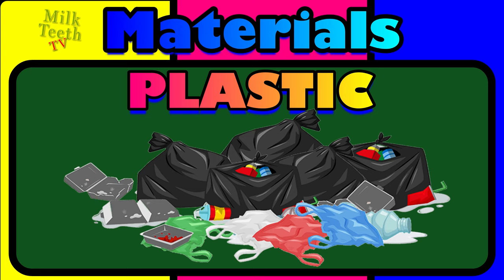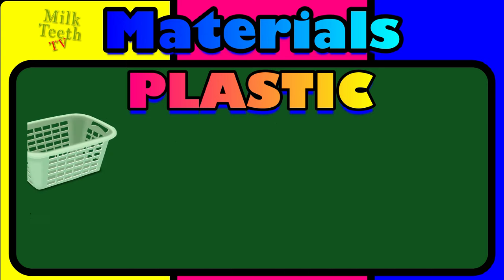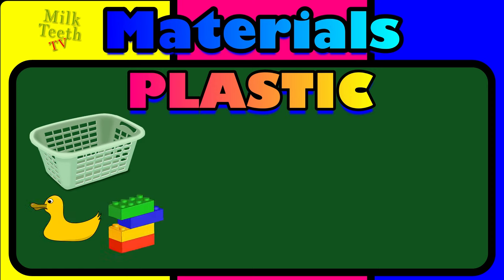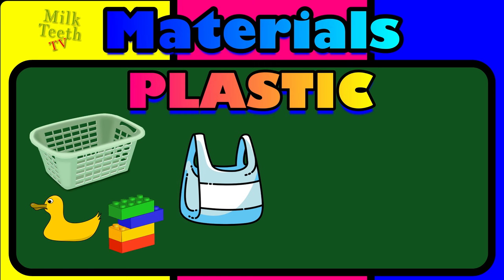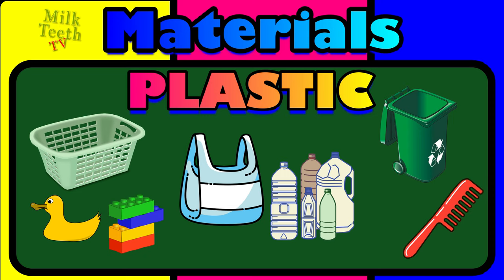Can you think of a few things made up of plastic? The laundry basket, your rubber ducky, your block toys, a carry bag, bottles, recycle bin, comb, and the sprayer — all are made up of plastic.